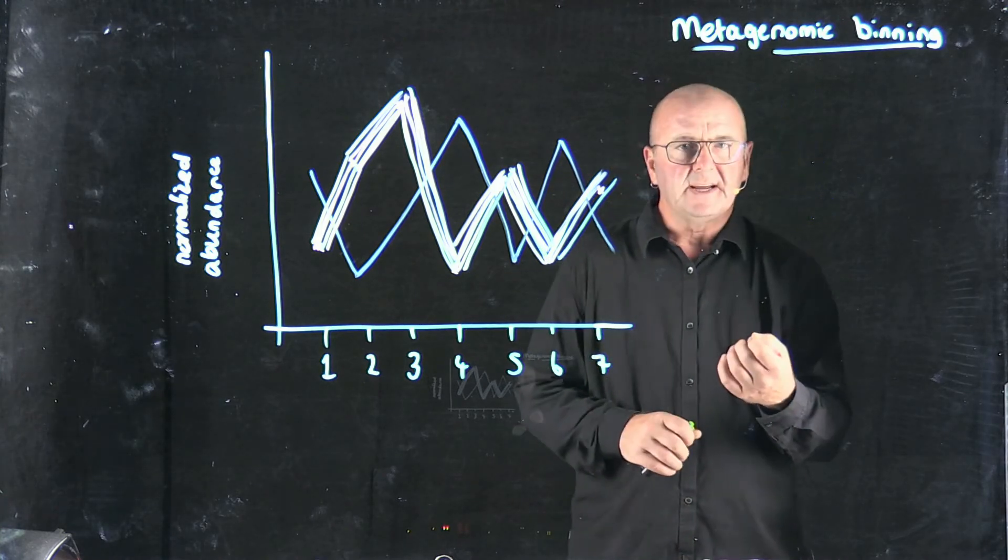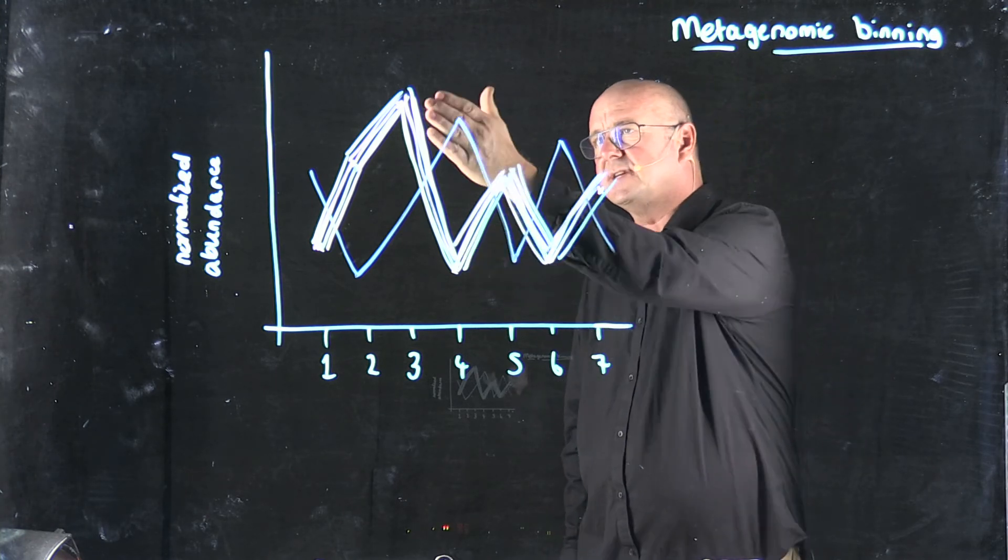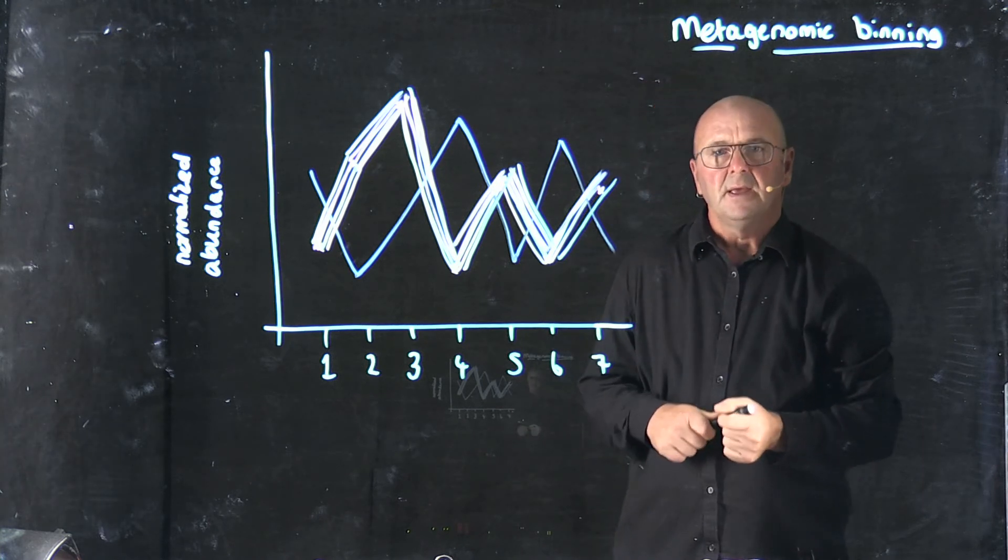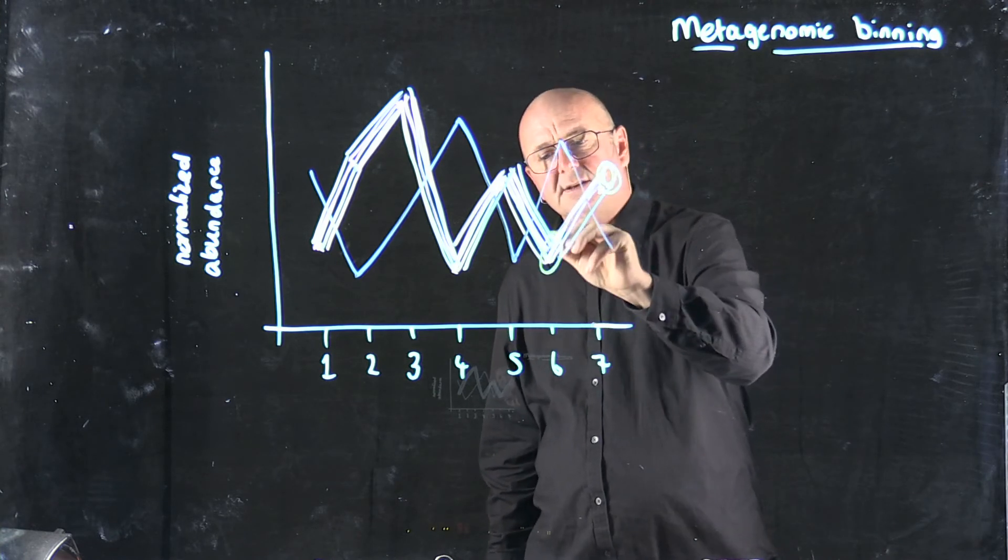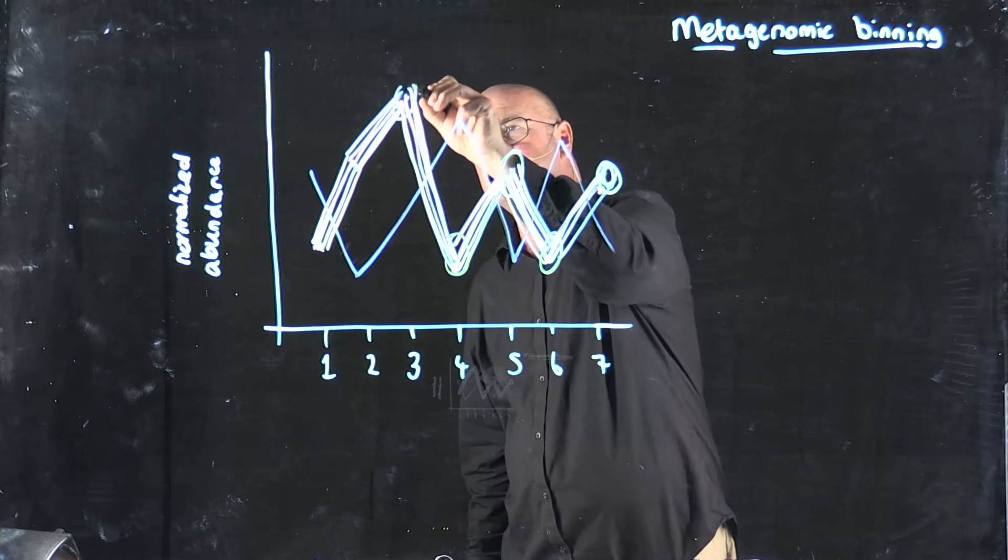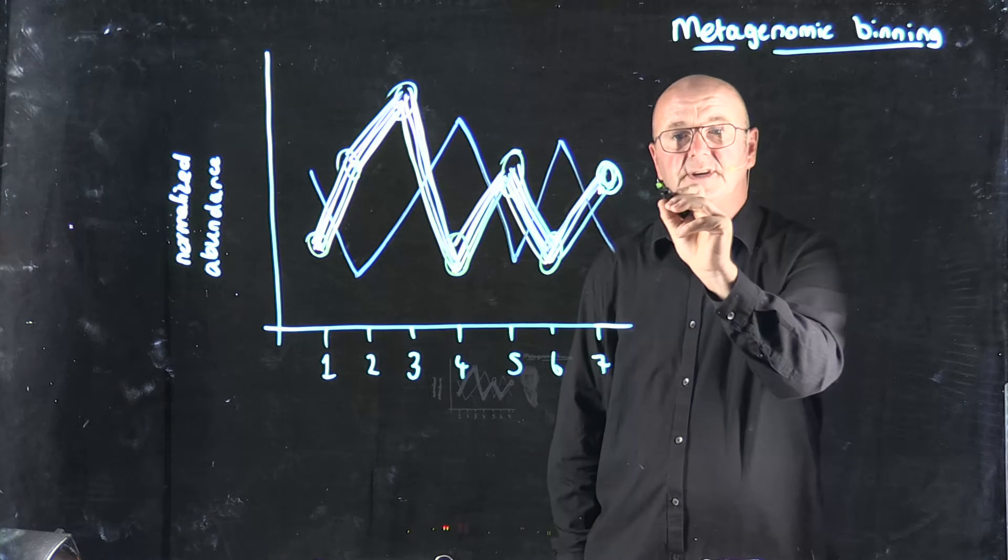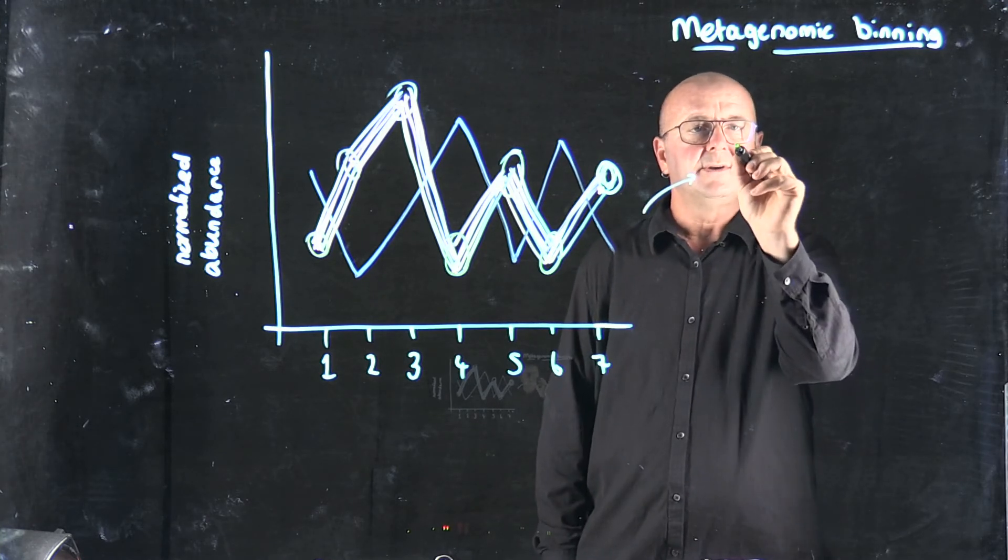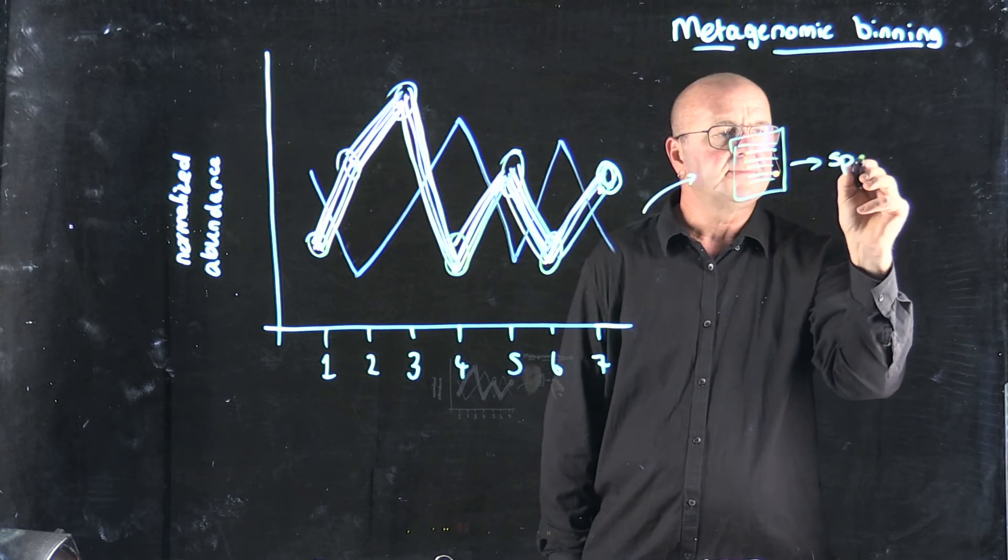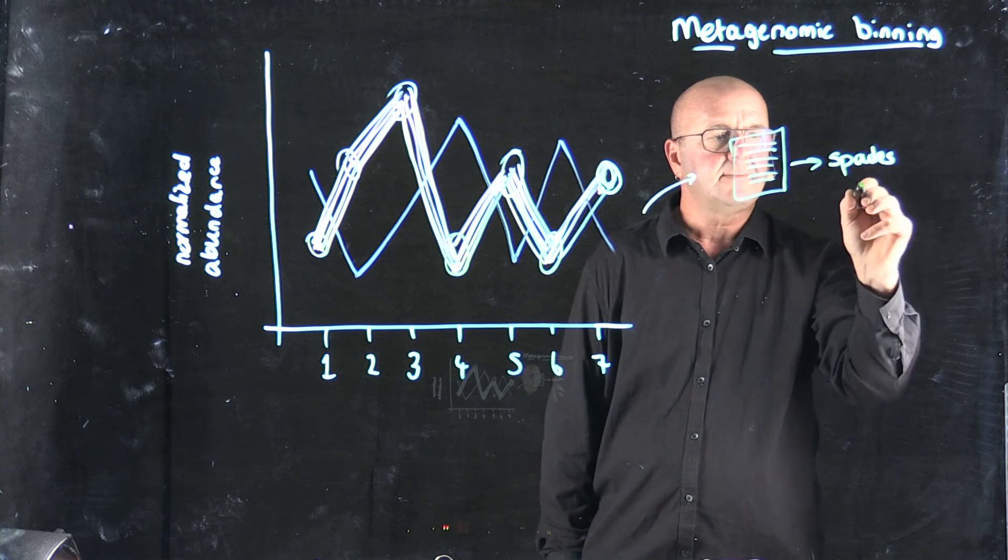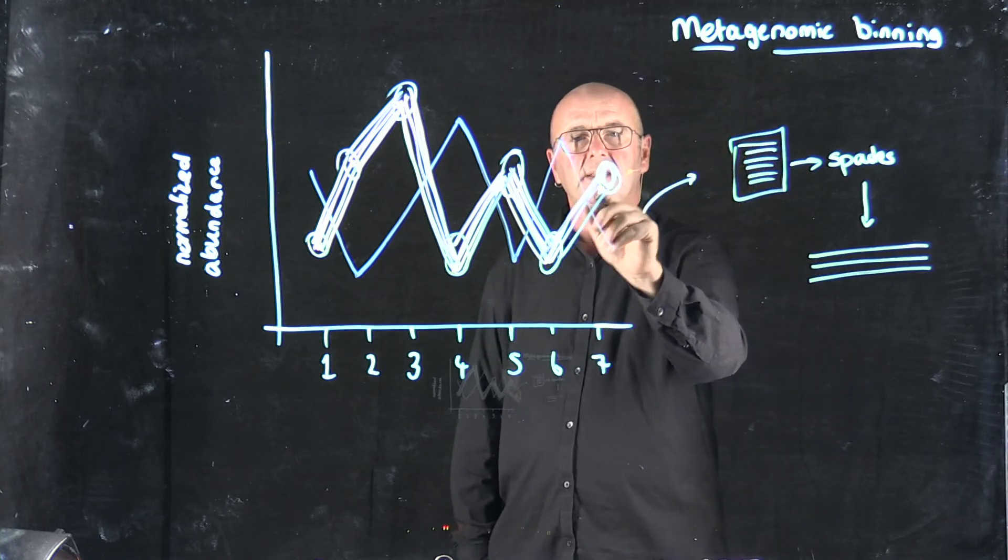So there are several different ways that we can get information and combine that information to identify contigs from genomes. And what we've found is by doing this, if we pull out all of the reads that contribute just to these contigs from those days, if we pull out just those reads and put them into their own fastq files and take those fastq files and run spades on them to do our own assembly, we get much bigger contigs that come out than we've had in the first place.